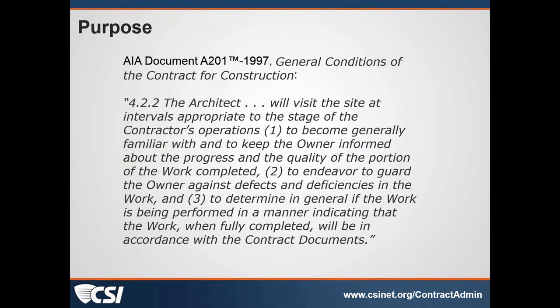Just verifying, since we're talking about CDs, the CDs include all documents including MEP and structural as well. Construction documents are typically defined in the contract documents and general conditions, and would include the drawings the architect prepared, the drawings all consultants have prepared, and the specifications they have prepared. That extends through the bidding process into any addendums issued. When you get into construction, it would also include change orders, supplemental instructions, and any types of documents that have changed the requirements of the contract documents. So it would include the MEP documents as well.